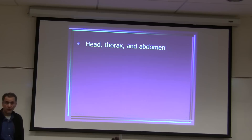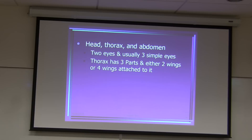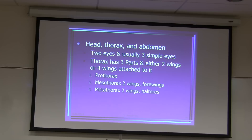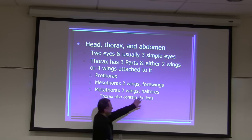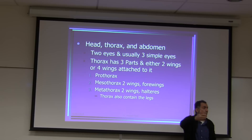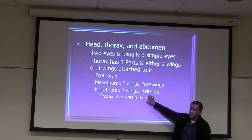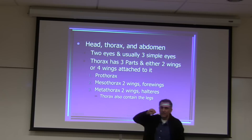The thorax has three parts and either two or four wings attached. Prothorax, mesothorax with two or four wings, and metathorax with two wings or halteres. Halteres are vestigial structures — in some species like the housefly, they are present but have no clear function. Some scientists argue about whether halteres truly function in directional flight.